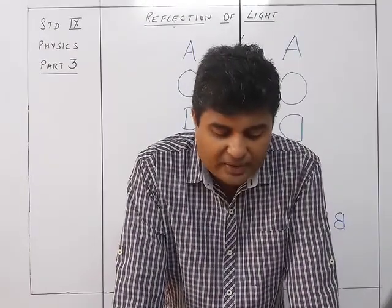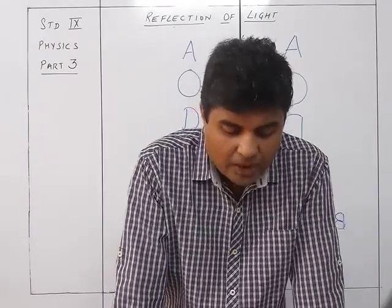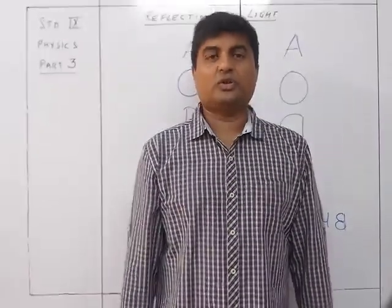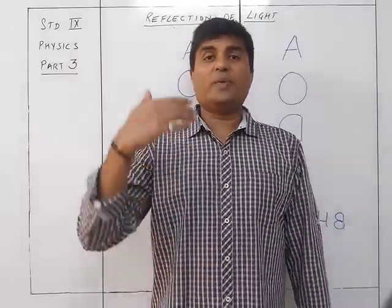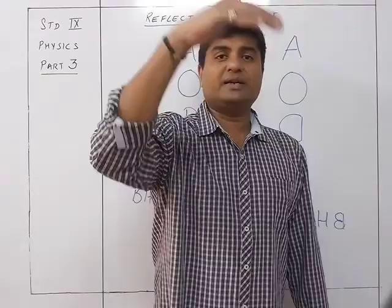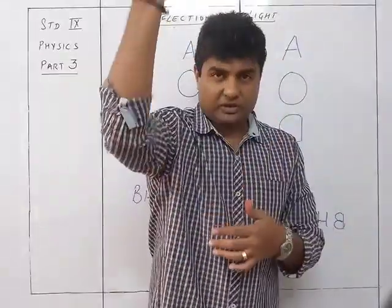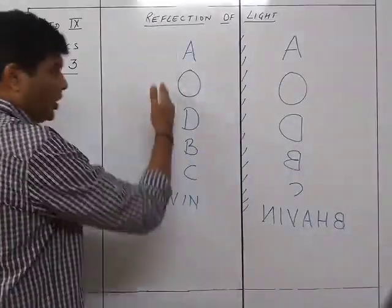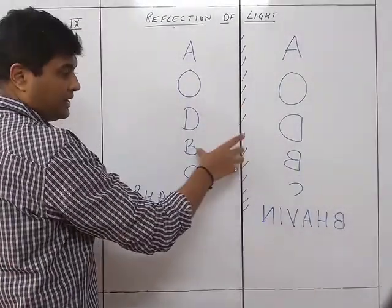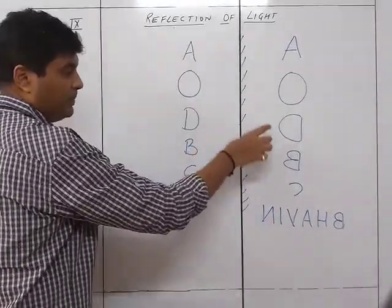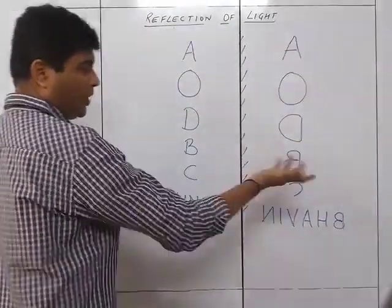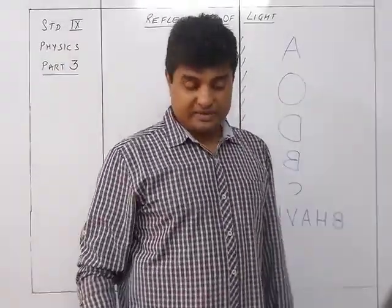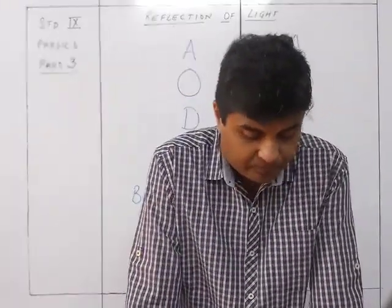Fifth, regarding location: the image is situated at the same perpendicular distance behind the mirror as the object is in front of it. The distance from the object to the mirror equals the distance from the mirror to the image. The image is always at the same perpendicular distance on the other side.